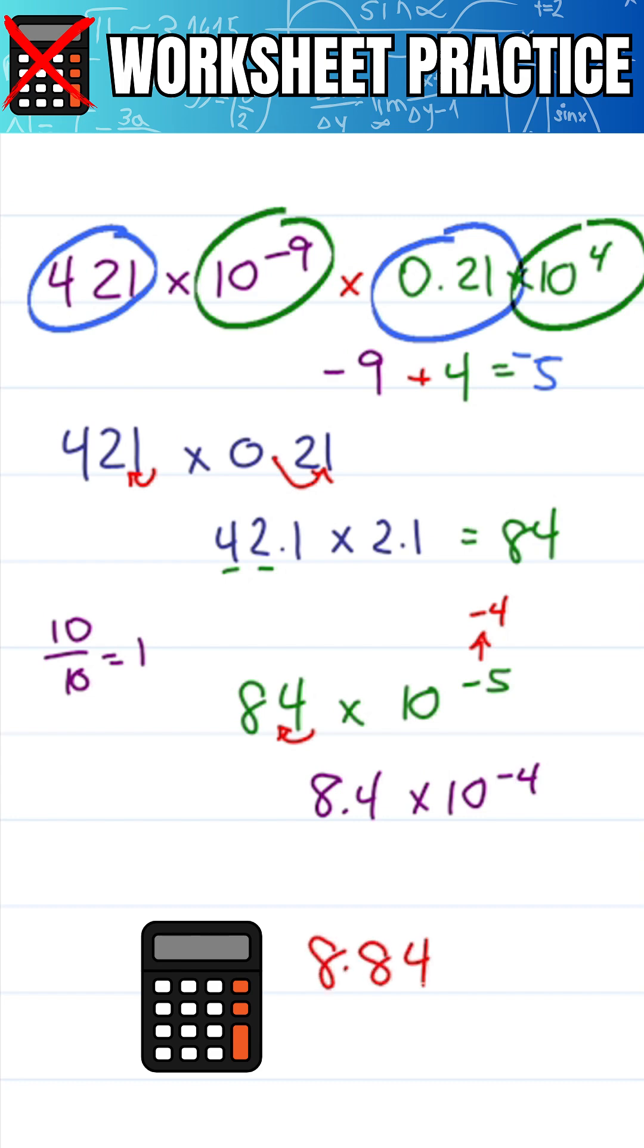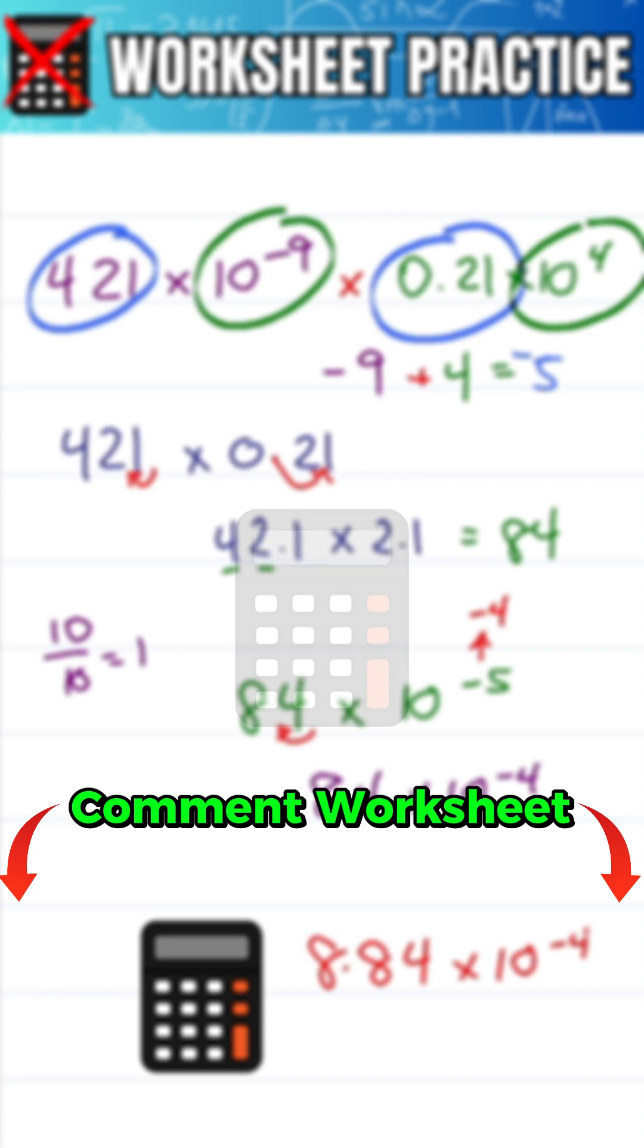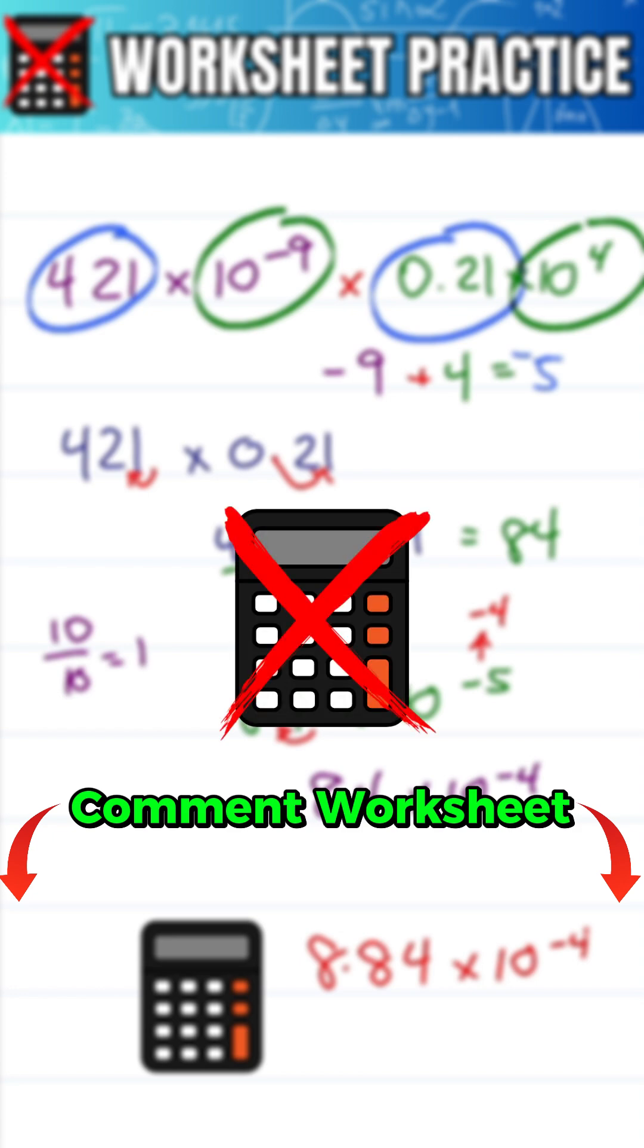Calculator says 8.84 times 10 to the minus 4 which is close enough. Comment worksheet for dozens more no calculator MCAT math shortcut practice.